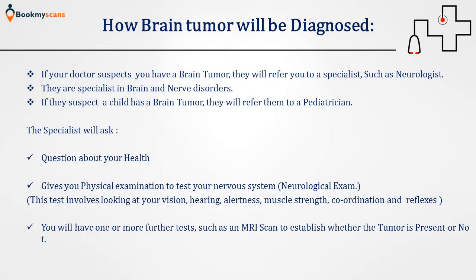If your doctor suspects you have a brain tumour, they will refer you to a specialist such as a neurologist, who specialises in brain and nerve disorders. If a child is suspected, they will be referred to a paediatrician. The specialist will ask about your health and give you physical examinations to test your nervous system — the neurological exam — which involves looking at your vision, hearing, alertness, muscle strength, coordination and reflexes. You will then have one or more further tests, such as an MRI scan, to establish whether a tumour is present.